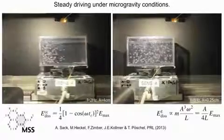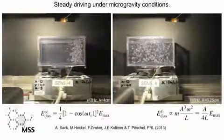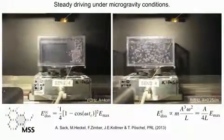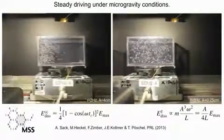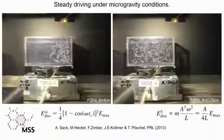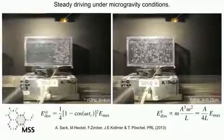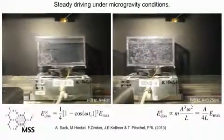For large amplitudes, all particles collapse inelastically onto the wall twice per period and get released once the box starts to decelerate. These two regimes are separated by a threshold amplitude determined by the filling ratio of the container.